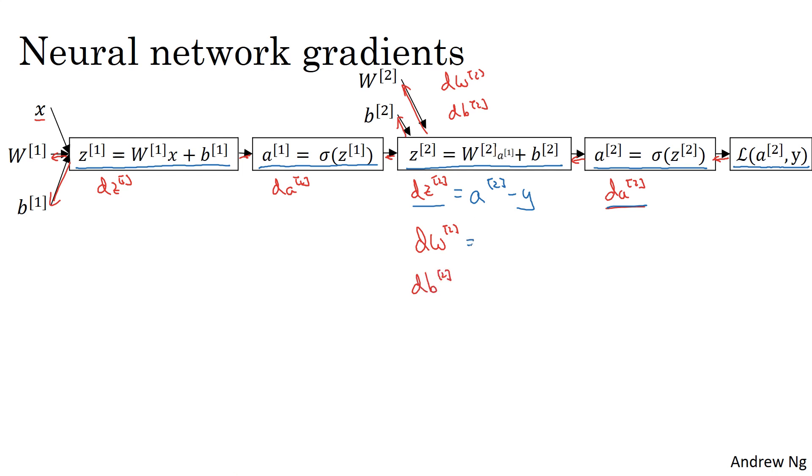You have that dw2 is equal to dz2 times a1 transpose, and db2 equals dz2. This step is quite similar for logistic regression, where we had that dw was equal to dz times x. Except that now, a1 plays the role of x, and there's an extra transpose there.